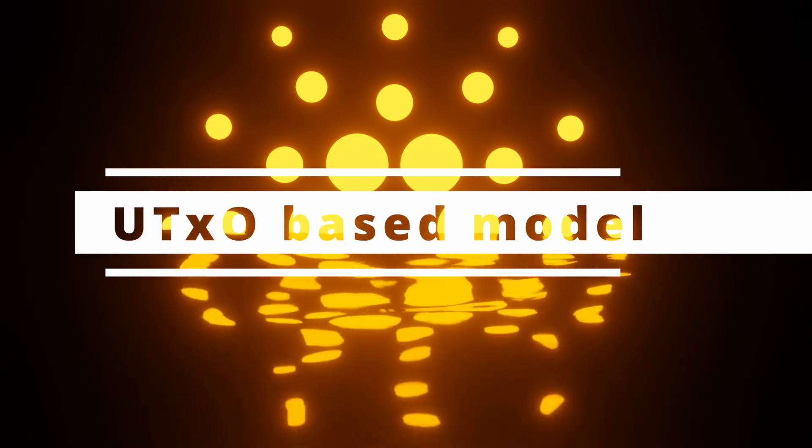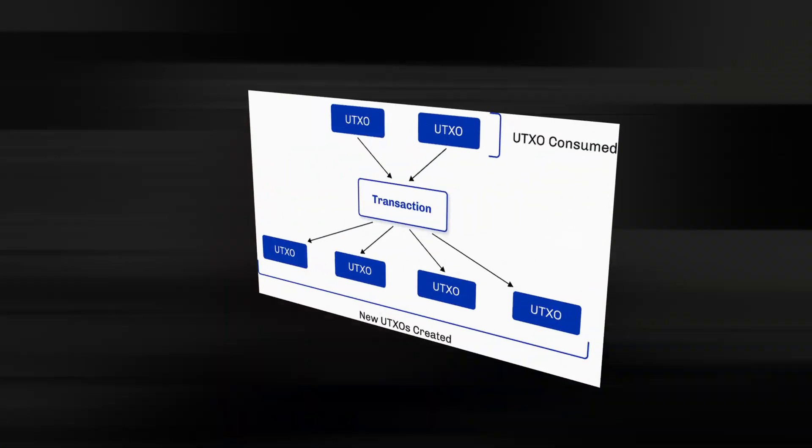The UTXO-based model is actually in crypto terms the oldest trick in the book — not everyone knows this is what Bitcoin actually uses. It's much more complex than the account-based model. The basics are that transactions consume unspent outputs, which produce more outputs that can then be used as inputs. Let's make this easier — check out this graphic.